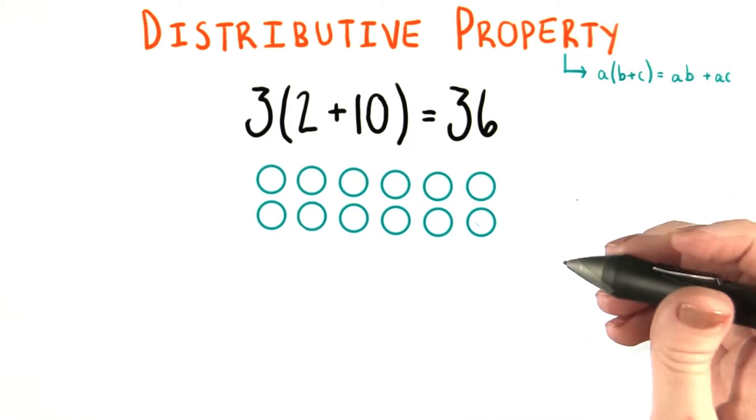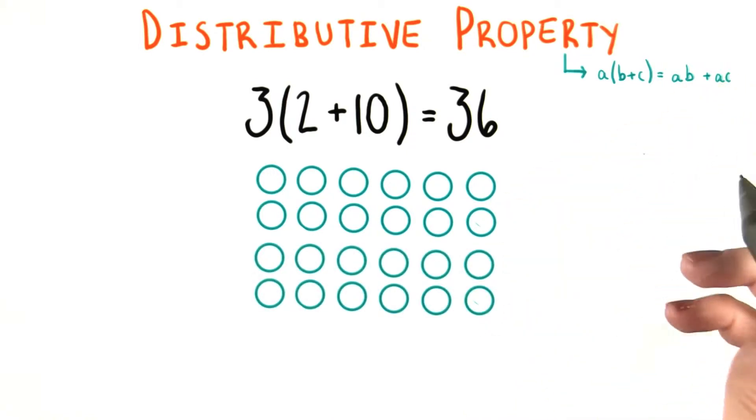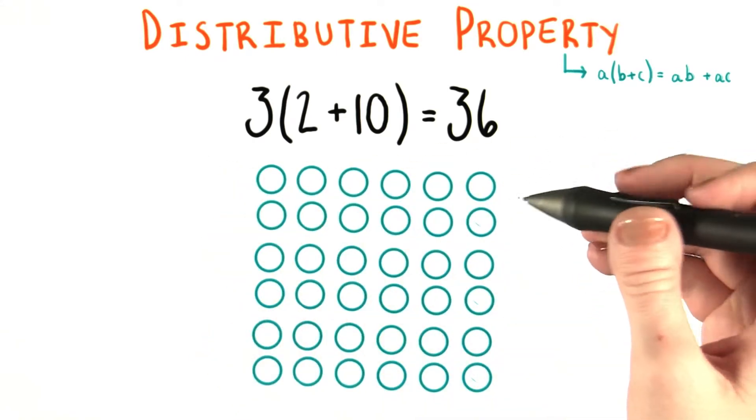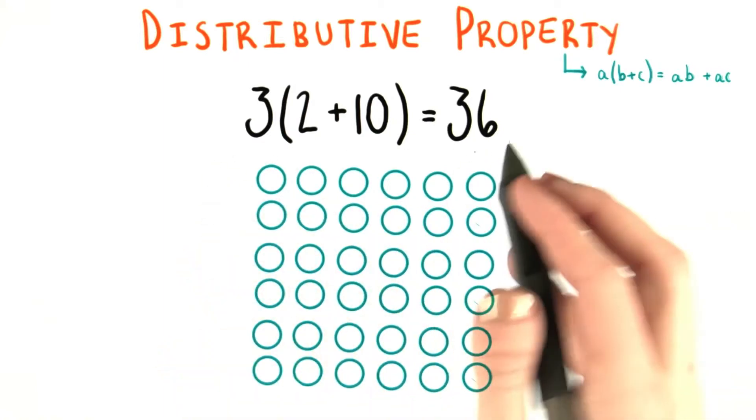So right now we have 1 set, and I can add 1 more, which makes 2 sets, and then I can add a third one. Remember multiplication is just repeated addition. So now I have 3 groups of these 12 circles together, and that's it.